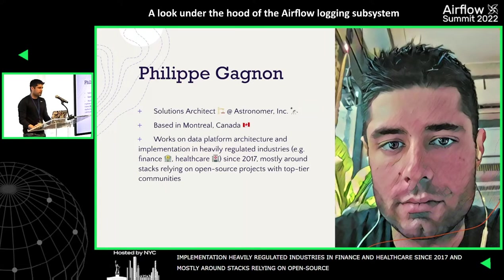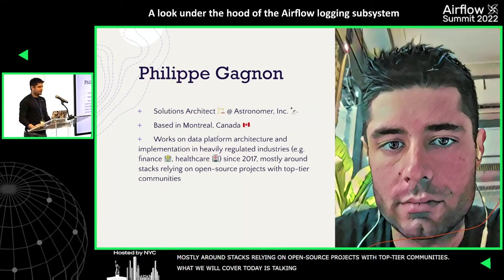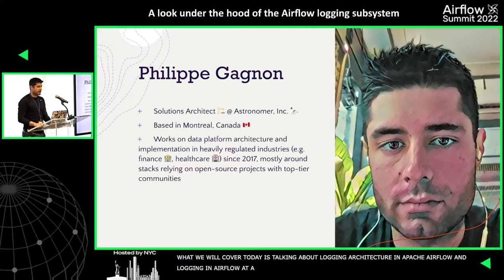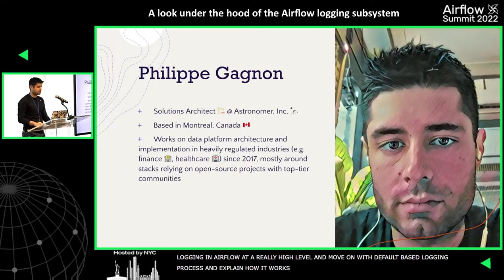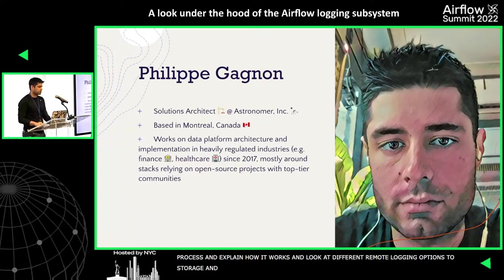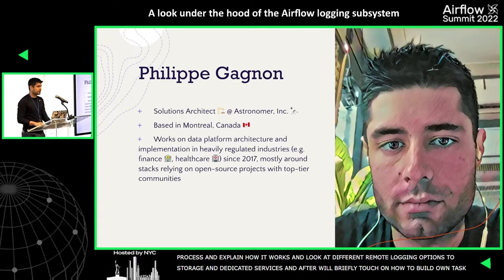What we're going to be covering today: we're going to talk about the logging architecture in Apache Airflow. Starting with logging in Airflow at a high level, then we'll move on to the default file-based logging process and explain how that works. Afterwards, we'll look at different remote logging options to object storage and to dedicated indexing services. And finally, we'll briefly touch on how you can roll your own task log handler if you're looking to implement a system not supported out of the box.